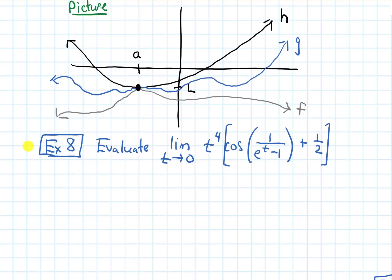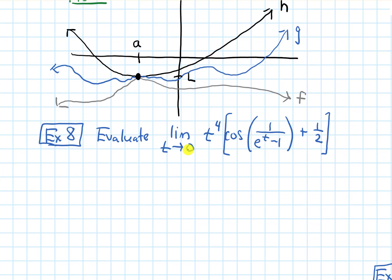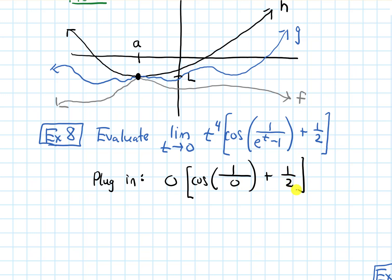Let's do an example: evaluate the limit as t approaches 0 of t⁴ · cos(1/(eᵗ − 1)) + 1/2. Let's try plugging in first. We get 0⁴, which is zero, times cos(1/(e⁰ − 1)) = cos(1/0), and then plus 1/2. At first glance it seems like zero times something, which should just be zero — but 1/0 is undefined, so I can't just say zero times something equals zero.